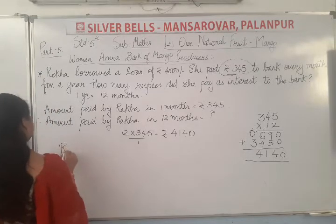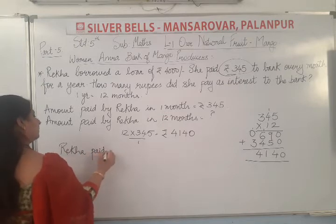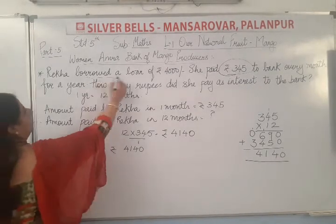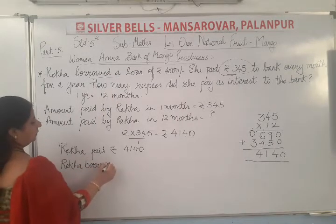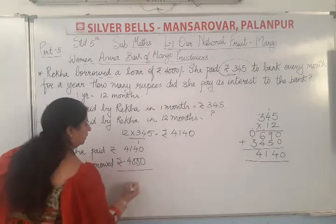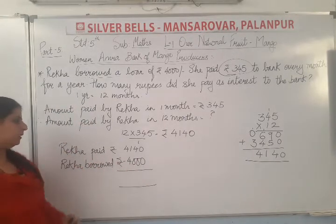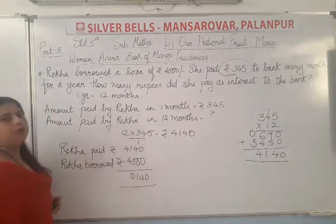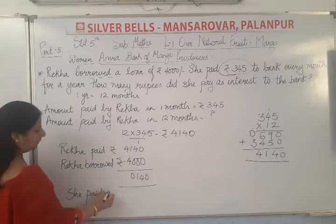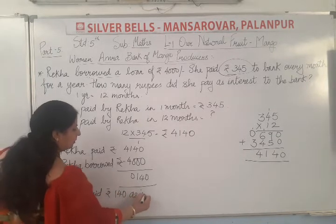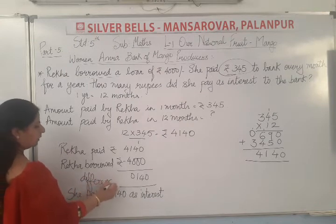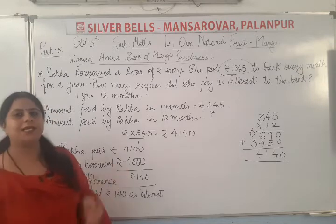Now, Rekha paid Rs.4,140. She borrowed Rs.4,000. We will find the difference: 4140 minus 4000 equals 140. How many rupees did she pay as interest? She paid Rs.140 as interest to the bank.